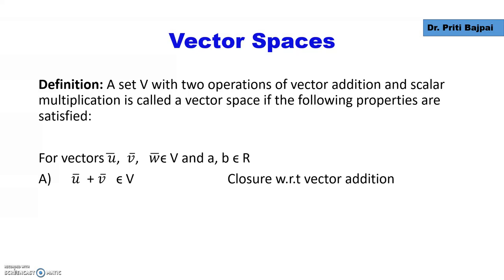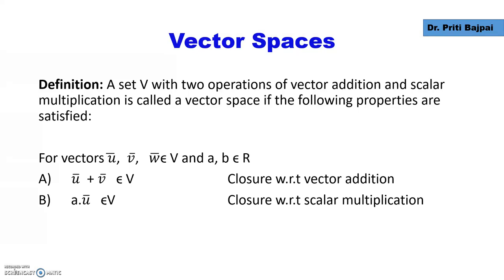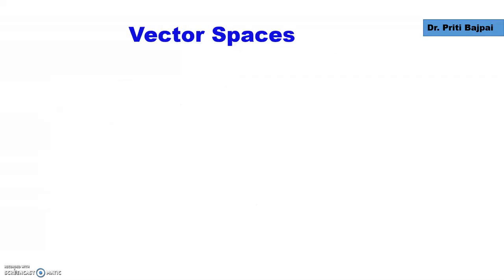So what are these properties? There are 10 in number. The first two are known as closure properties. One is when we add two vectors, the end result should belong to the set. And when we multiply a vector by a scalar, that should also belong to the set. These are the closure properties with respect to addition and scalar multiplication.